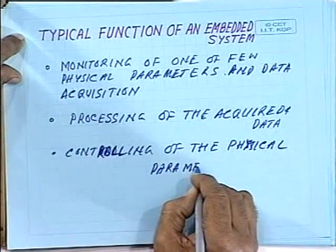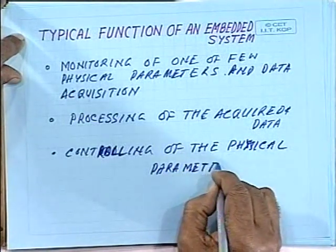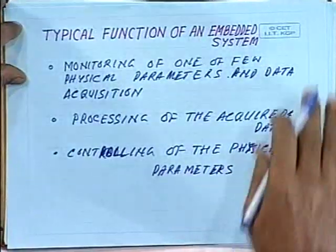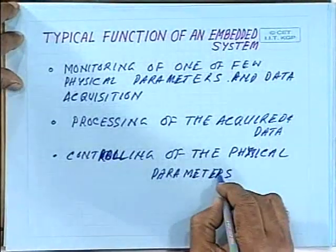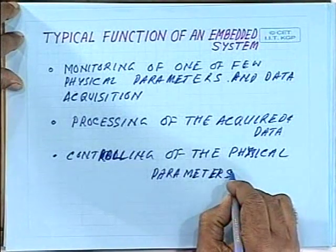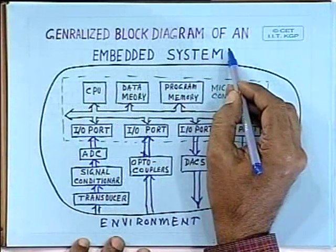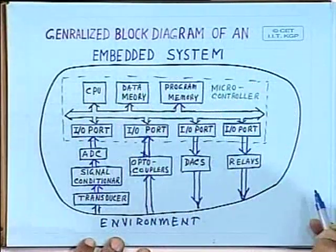You have to control those physical parameters like temperature, pressure, light intensity, and various other parameters. For that purpose, the system must generate some signal, so you require suitable input-output devices. Let us have a look at a general block diagram of an embedded system.